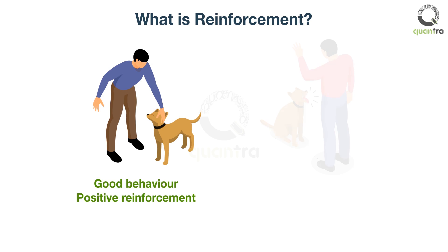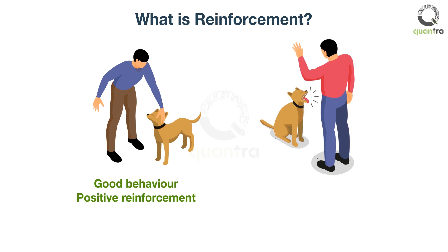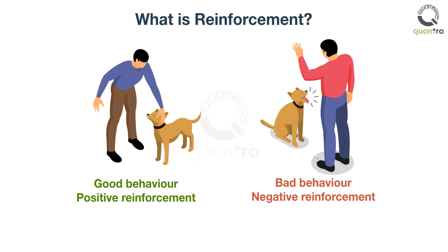And when the dog acts mischievously, the trainer yells to stop. That is called negative reinforcement. In this way, we reward good behavior while penalizing the bad. Ultimately, the dog is trained and becomes our best friend for life.